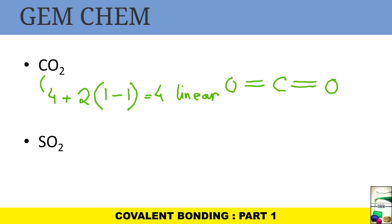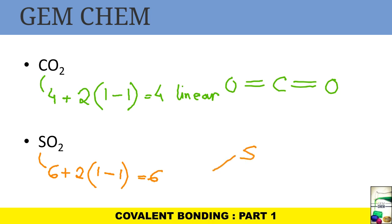For SO2: sulfur has six electrons, and each of the two oxygens contributes plus one sigma minus one pi — ultimately giving six. The structure has two double-bonded oxygens and one lone pair on sulfur, giving a bent shape.